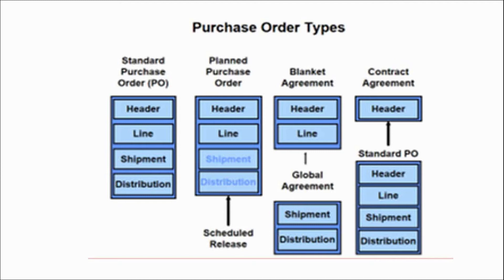In the standard purchase order, we generally have a relationship with the supplier for only one time. In a standard purchase order, everything is very clear and transparent to the supplier. At the header level you will find the header, at the line level you will find the lines, and there is also the shipment level as well as the distribution level.